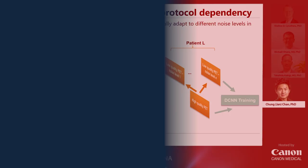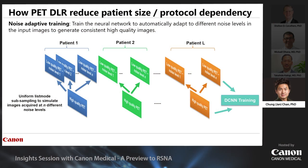To reduce patient size protocol dependency and therefore produce high quality images consistently across different patients, we train the neural network to adapt to different noise levels in the input images. This is achieved by noise adaptive training. We pair a set of low quality images derived from the same study — each representing the same subject but corrupted with different levels of noise.